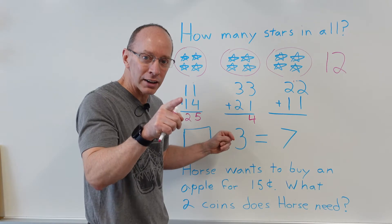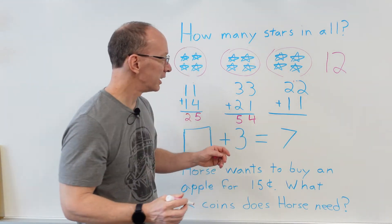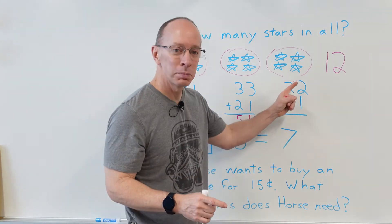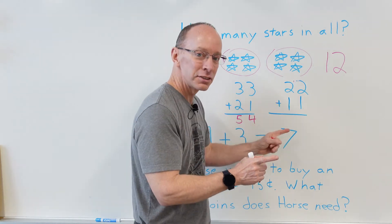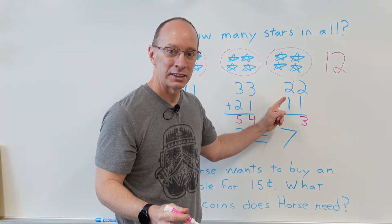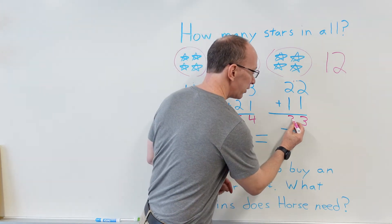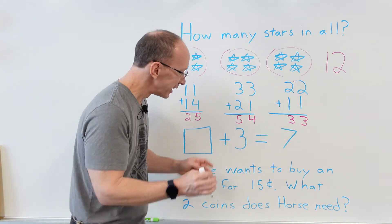All right, let's go ahead and add the tens. Three plus two is three, four, five, five. All right, next problem. Two plus one, what is it? You're right, three. And we add the tens in here, two plus one again, three, thirty-three.